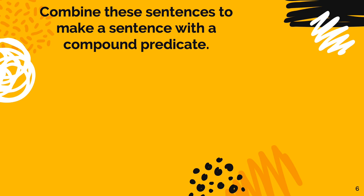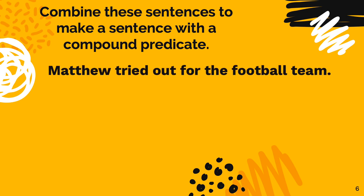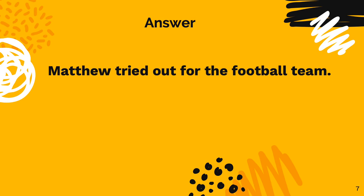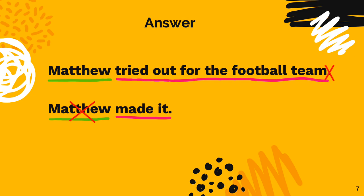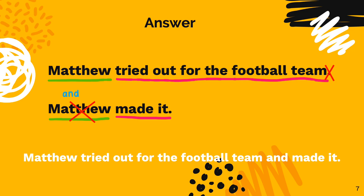Now we are going to practice some examples. Let's look at these two sentences: 'Matthew tried out for the football team' and 'Matthew made it.' Pause this video and combine these sentences to form one sentence with a compound predicate. You can write your answer on a sheet of paper. In these two sentences, Matthew is the subject, and 'tried out for the football team' and 'made it' are the predicates. We combine them by removing the second Matthew and the period after 'team' and inserting 'and' to make: 'Matthew tried out for the football team and made it.'